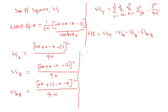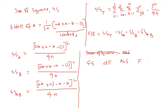In an ANOVA table, the columns are: sum of squares (SS), degrees of freedom (df), mean square (MS), F value, and P value. The total sum of squares breaks down into SS_A, SS_B, SS_AB, and SS_error.